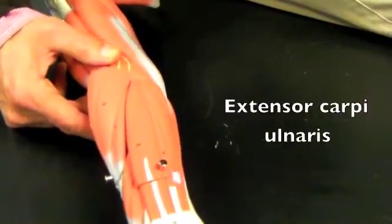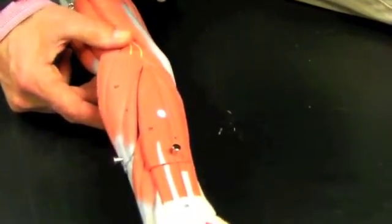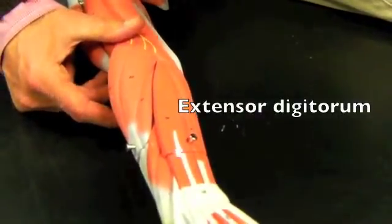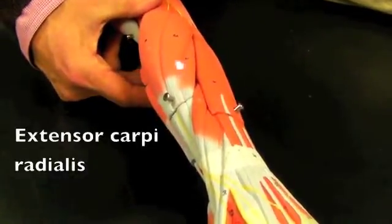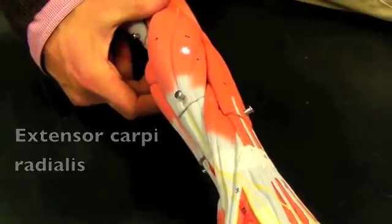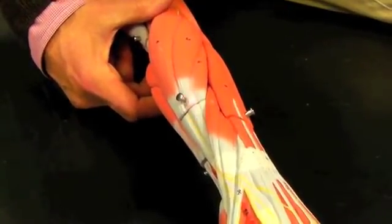You would have the extensor carpi ulnaris, extensor digitorum, and then the extensor carpi radialis, which is actually two muscles. It's a longus and a brevis coming down this way.